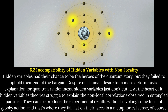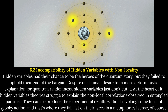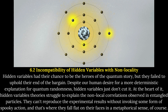Hidden variables had their chance to be the heroes of the quantum story, but they failed to uphold their end of the bargain. Despite our human desire for a more deterministic explanation for quantum randomness, hidden variables just don't cut it. At the heart of it, hidden variable theories struggle to explain the non-local correlations observed in entangled particles. They can't reproduce the experimental results without invoking some form of spooky action, and that's where they fall flat.